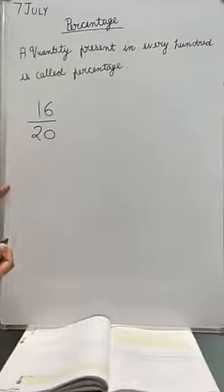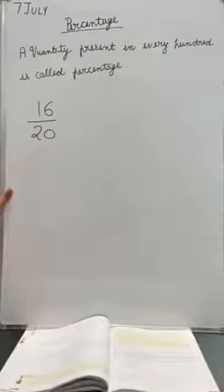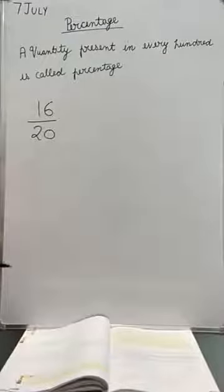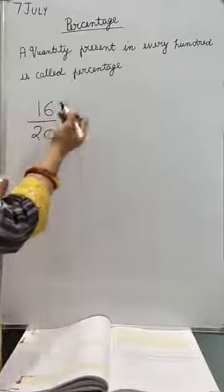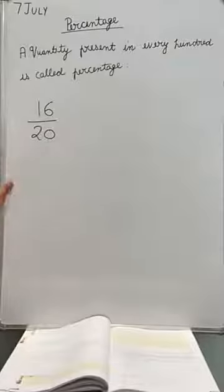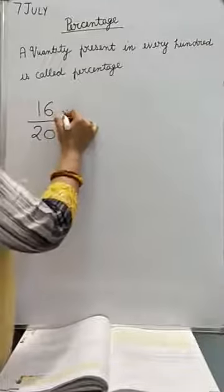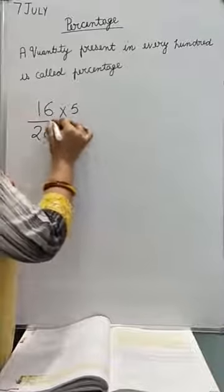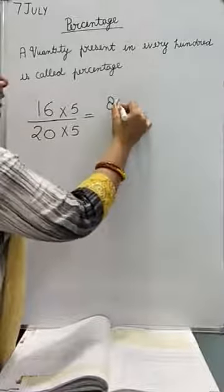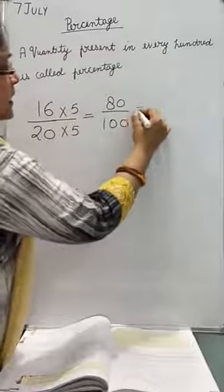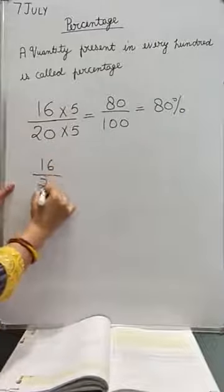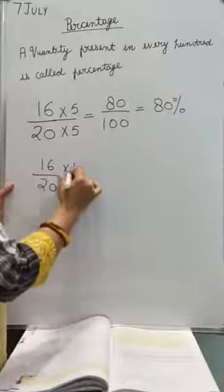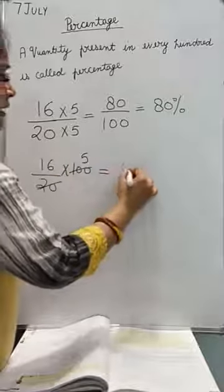A quantity present in every hundred is called percentage. It is not a new topic — you have studied it from class 5. When we compare out of 100, that is percentage. It is very simple. Suppose you have 20 marks out of 60. You can find the percentage by two methods: either by converting the denominator to 100, giving 80%, or by directly multiplying by 100.